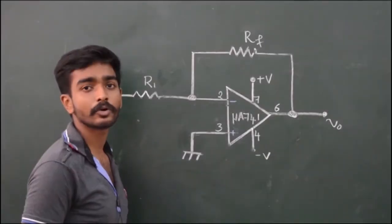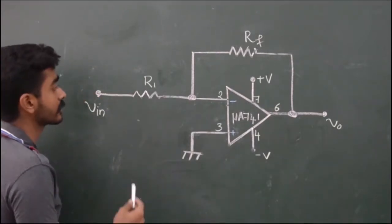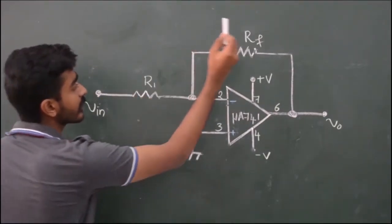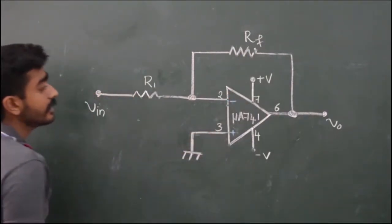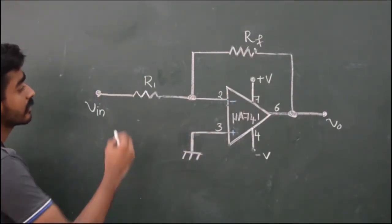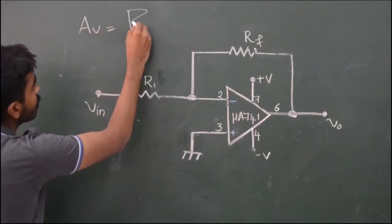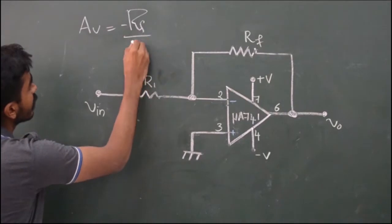The circuit diagram shows the op-amp configured in inverting mode of operation. Here, R1 is the input resistance, Rf is the feedback resistance. The gain of the op-amp is given as AV equals minus Rf by R1.